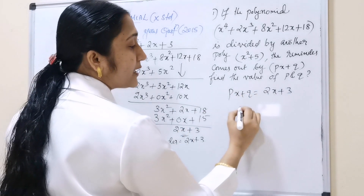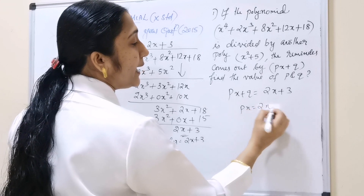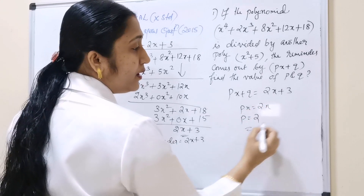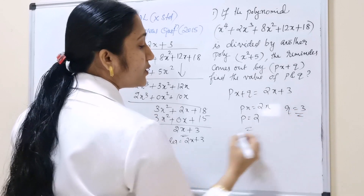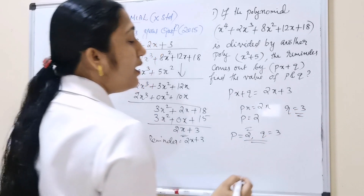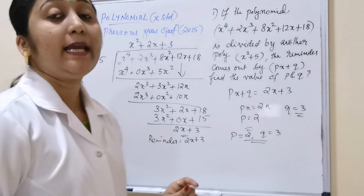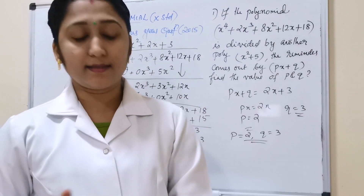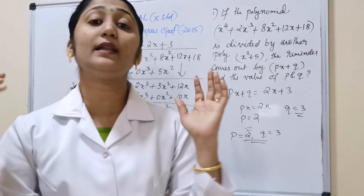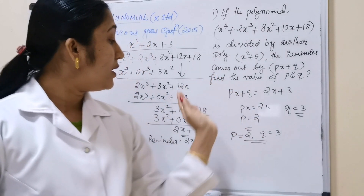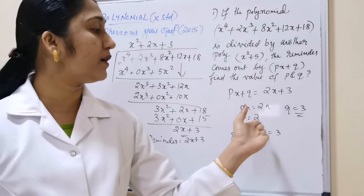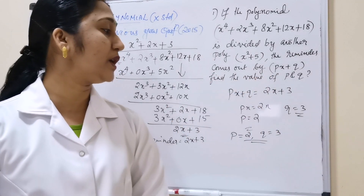Comparing px + q with 2x + 3: px = 2x, so p = 2. And q = 3. Therefore the values are p = 2 and q = 3. It is very easy — once you get the remainder 2x + 3, you simply equate it to px + q to find p and q.